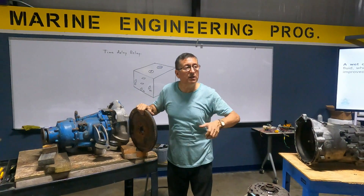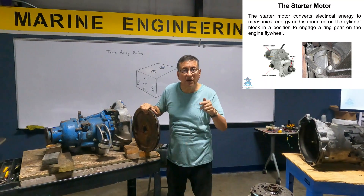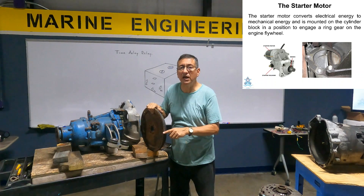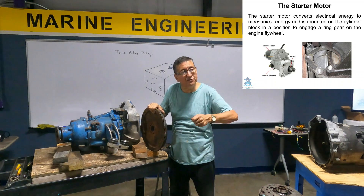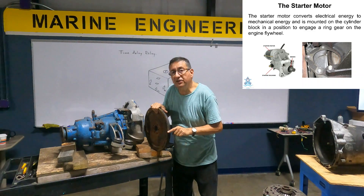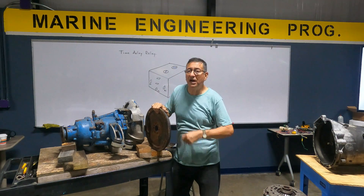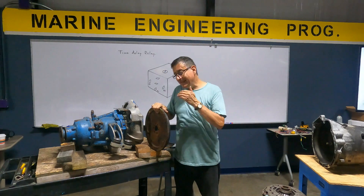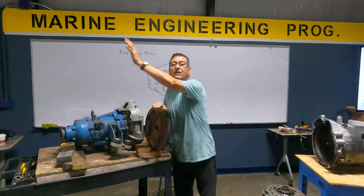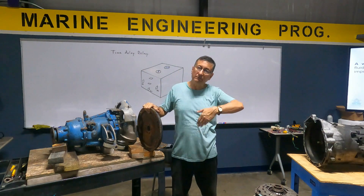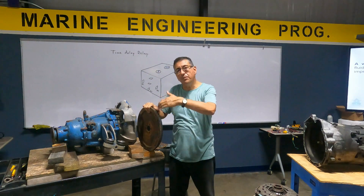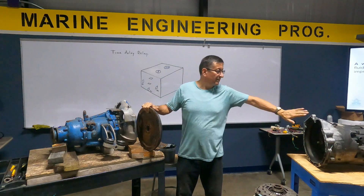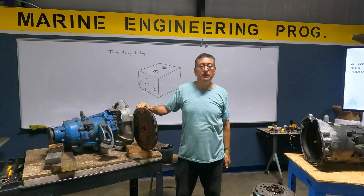When I start the engine, the starter motor gear engages here. When you send the start signal, the pinion enters here and moves it — the crankshaft. If you have spark and fuel, the engine starts. This flywheel is part of the engine, not part of the transmission. The crankshaft is here and this one is bolted on the crankshaft, but transmissions are independent. It doesn't matter if it's automotive or marine — independent of the engine.